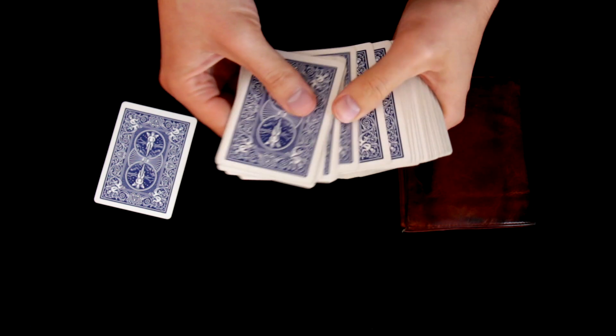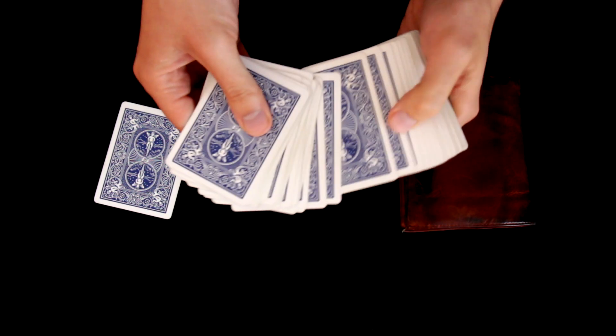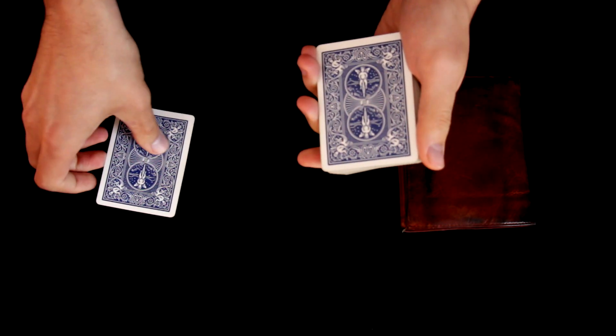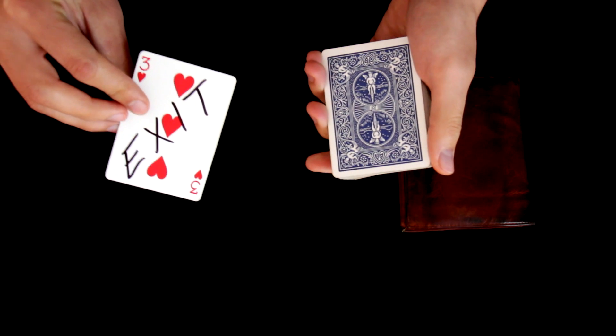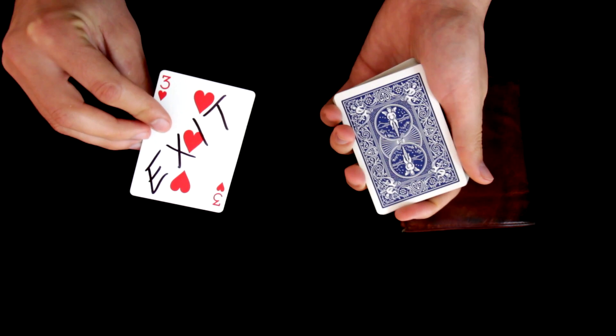For this trick we need a spectator to choose any card from the deck and sign it. In this case we will use an already signed card with my name, which is three of hearts.